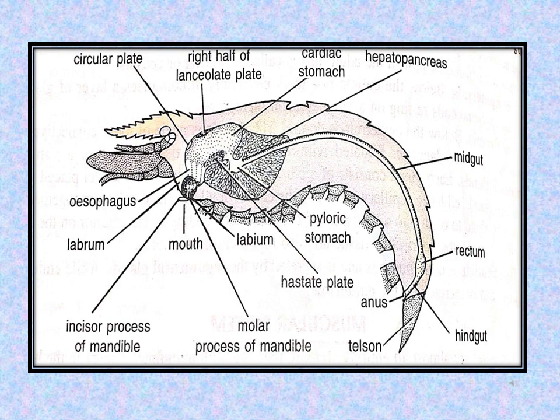Coming to the cardiac stomach, it is lined with a thin cuticle. It is longitudinally folded. At places, the cuticle is thickened and calcified into plates. Near the esophageal opening, there is a circular plate. On the roof, near the anterior and lanceolate end, lanceolate plate is present. On the floor of the cardiac stomach, hastate plate is present.